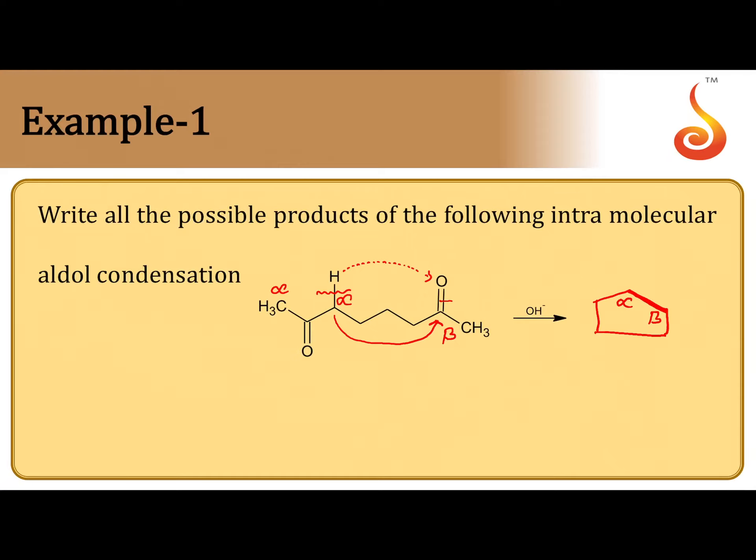At beta carbon double bond O which was present earlier now becoming OH, and other side CH3 is present. I think you are able to understand. Next, at alpha carbon, other side COCH3 is there. So beta hydroxy aldehyde, this is cyclic aldol, 5-membered ring. Next one.